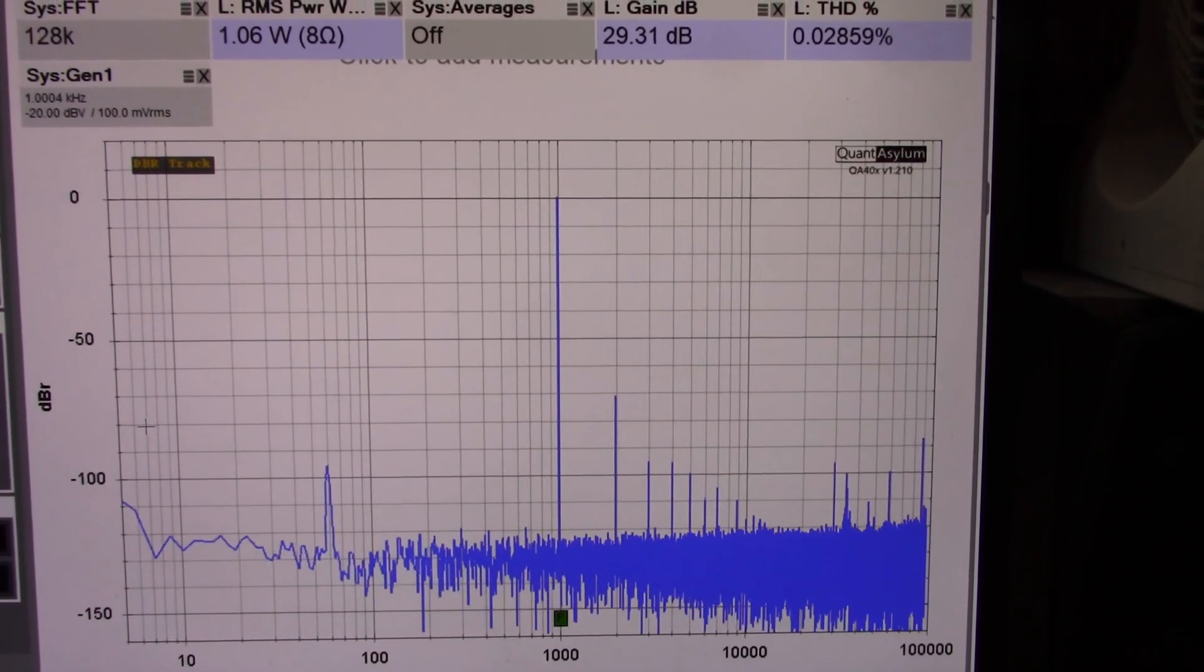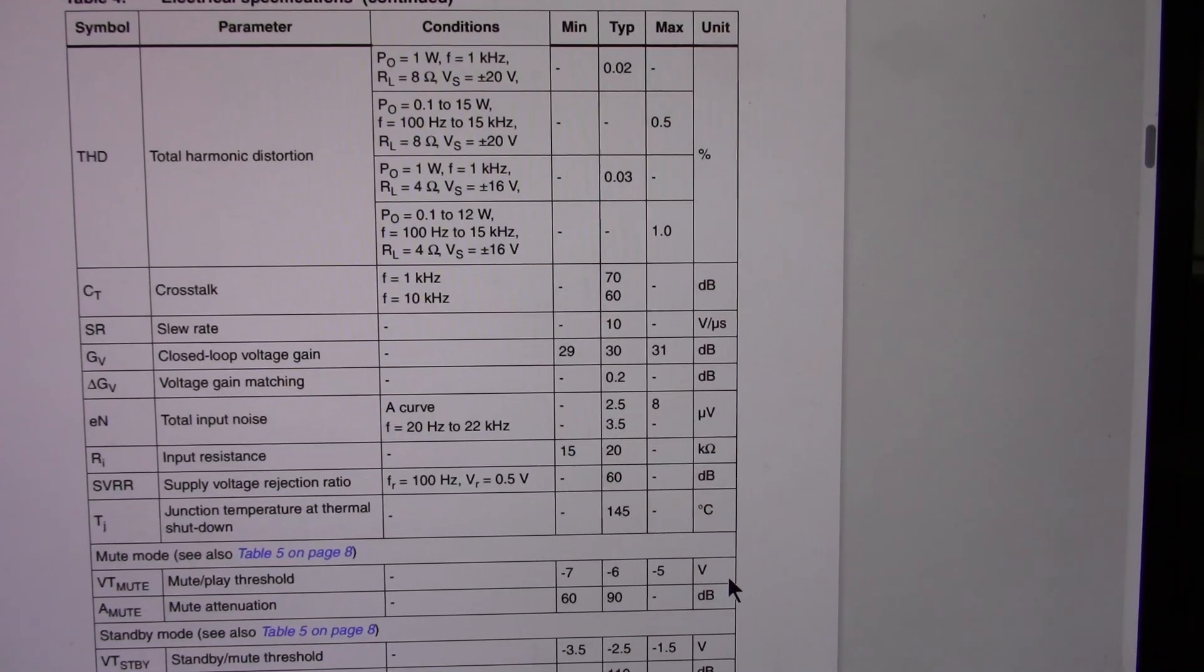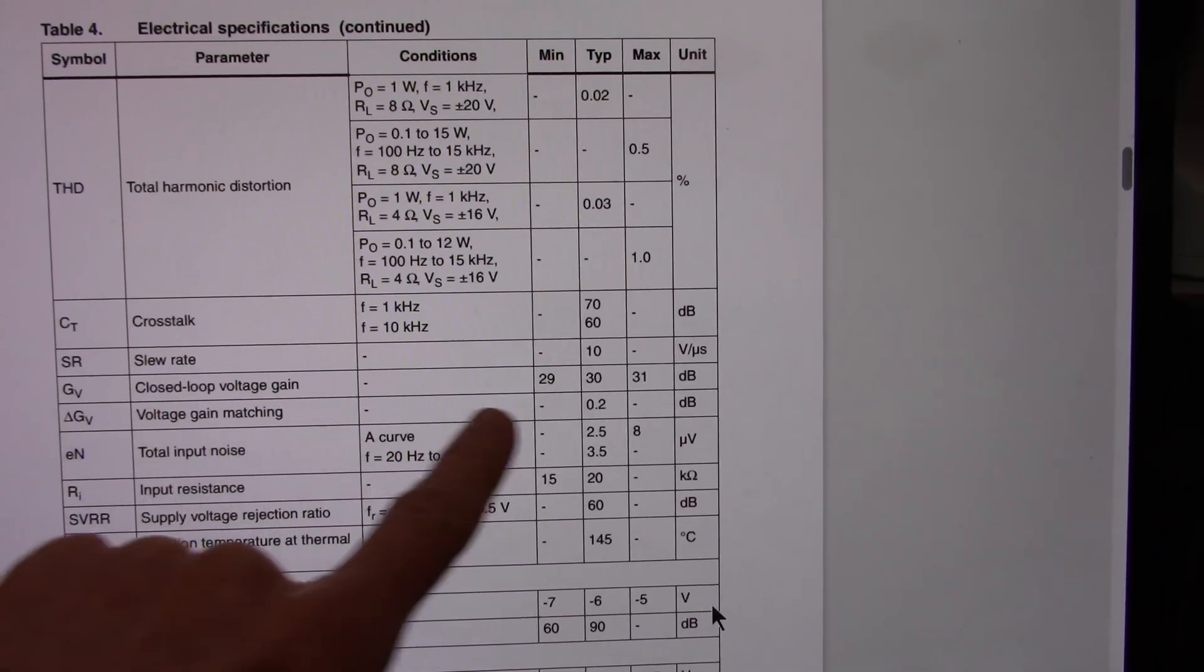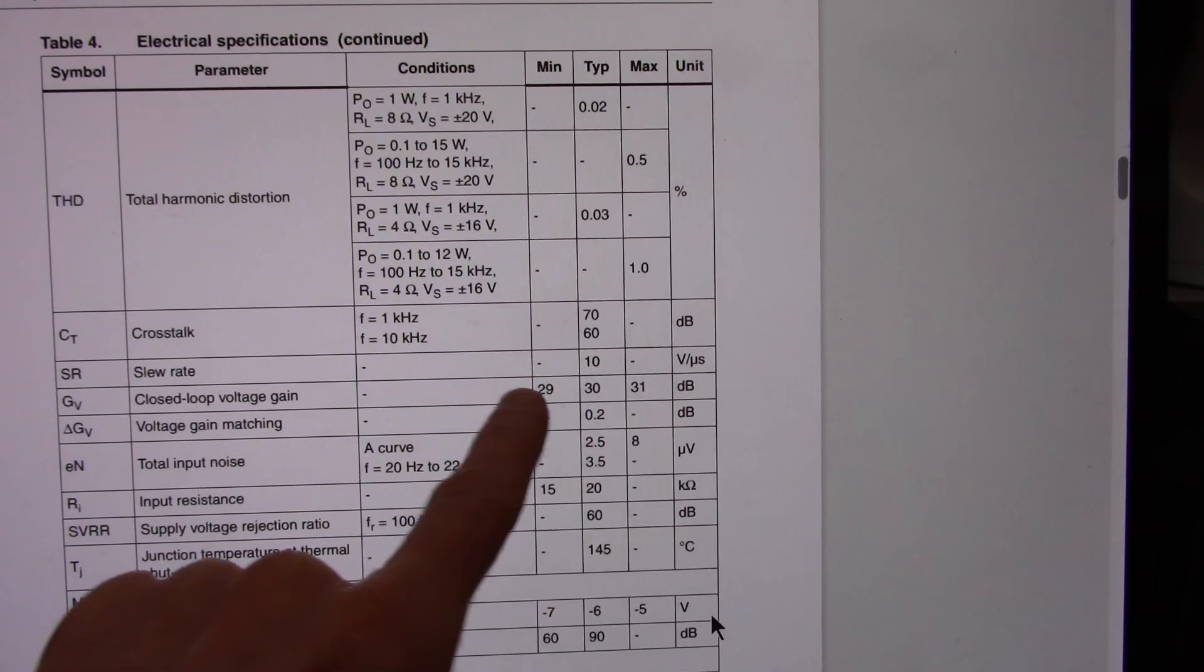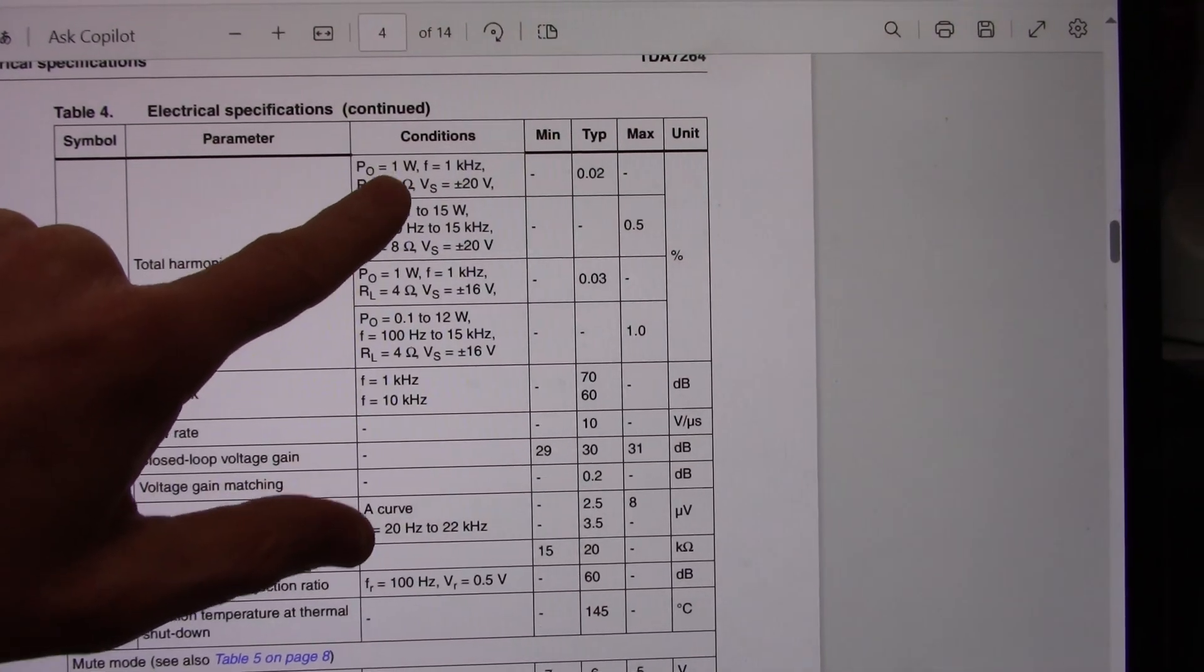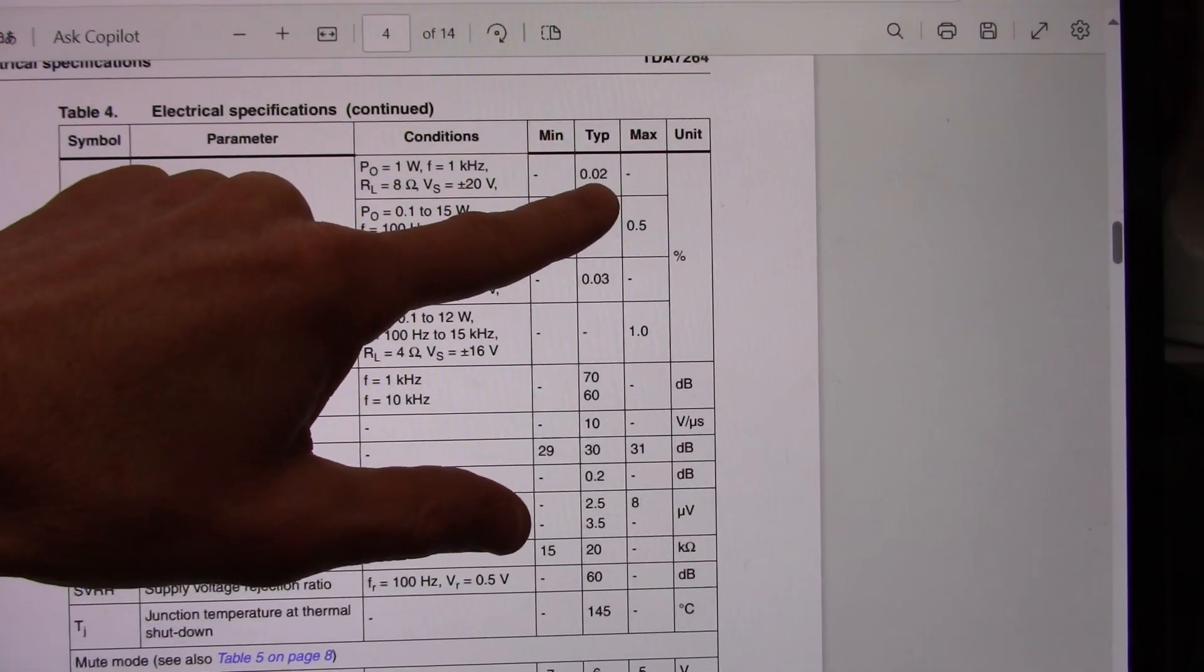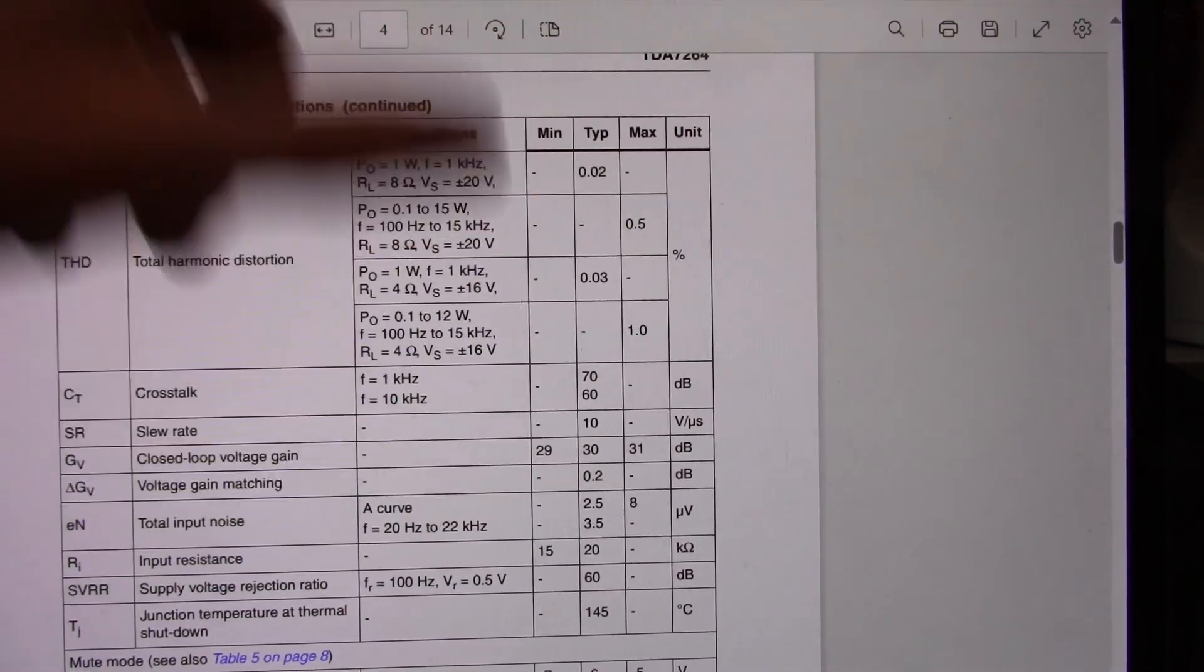Let's look at the data sheet because I'm not sure what that should be. We're right where we should be - closed loop voltage gain 30 dB with a range of 29 to 31, so we're definitely within that range. The distortion at 1 watt, 1 kilohertz, 8 ohm, plus minus 20 volts, exactly what we're measuring, and we're pretty close. 0.02 typical rating.